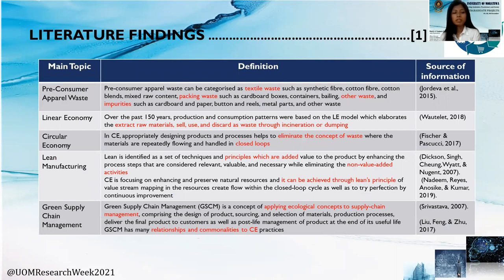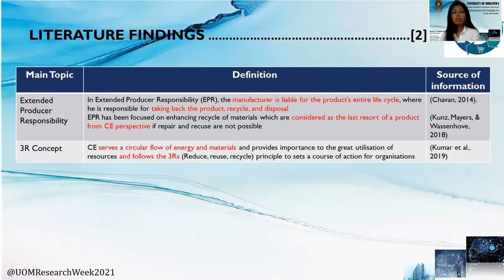Going to the key literature findings, pre-consumer apparel waste comprises four categories of waste: namely textile waste, packing waste, impurities, and other waste. Linear economy is considered as extract raw materials, sell, use, and discard as waste through incineration or dumping. Circular economy is about eliminating the concept of waste through closed-loop cycles. Lean manufacturing is about eliminating non-value added activities. Green supply chain management is about applying ecological concepts to supply chain management. Extended producer responsibility means the manufacturer is liable for the entire lifetime of a product, taking back the product, reusing, recycling, and disposing. The 3R concept is about reduce, reuse, and recycle. Based on several research findings, it has been identified that there are several relationships and commonalities between these four concepts and circular economy. Therefore, circular economy will be implemented within the Sri Lankan context using these four waste management concepts.